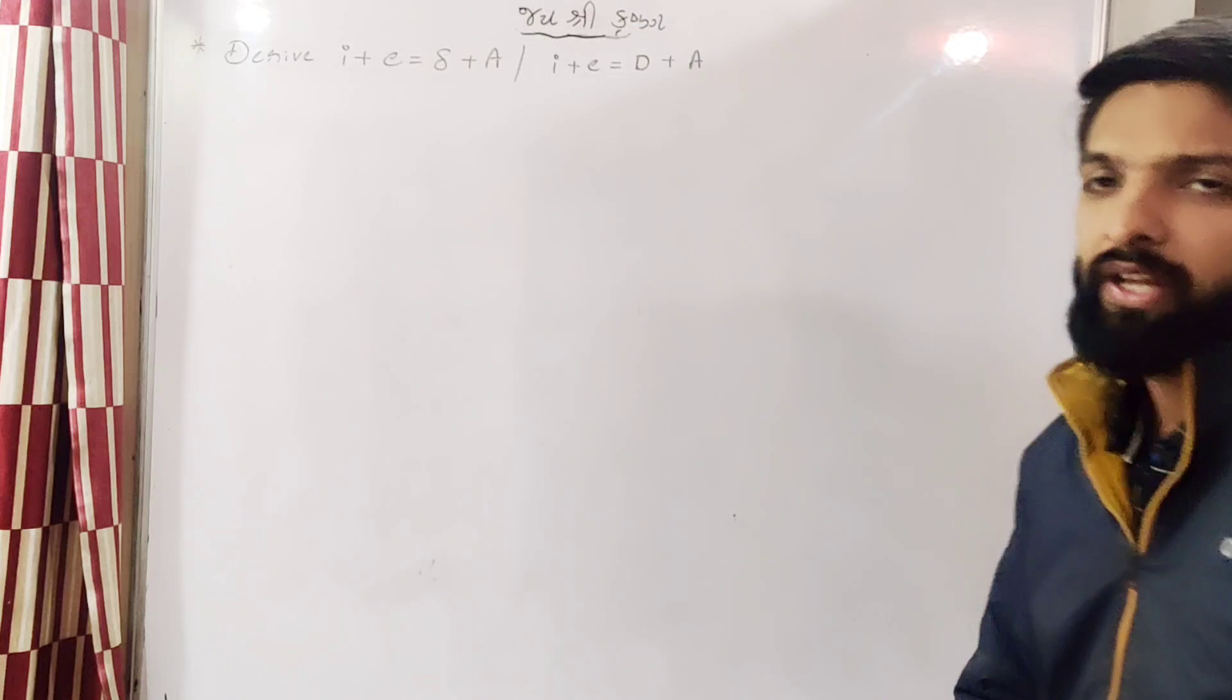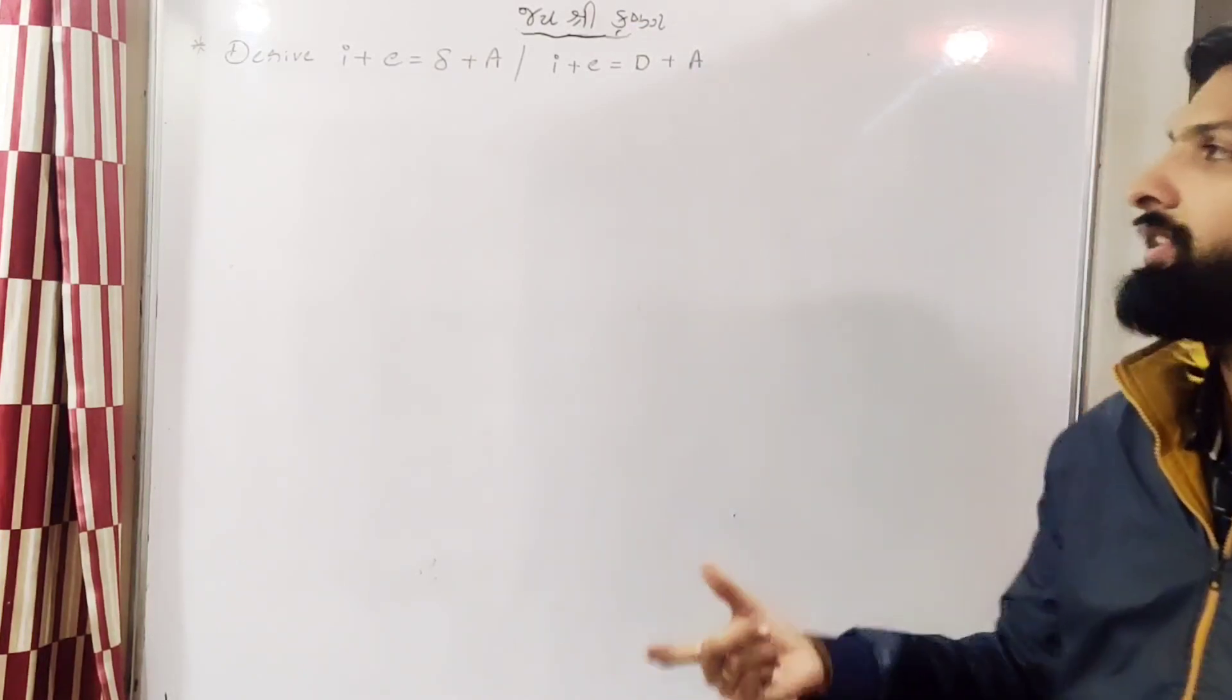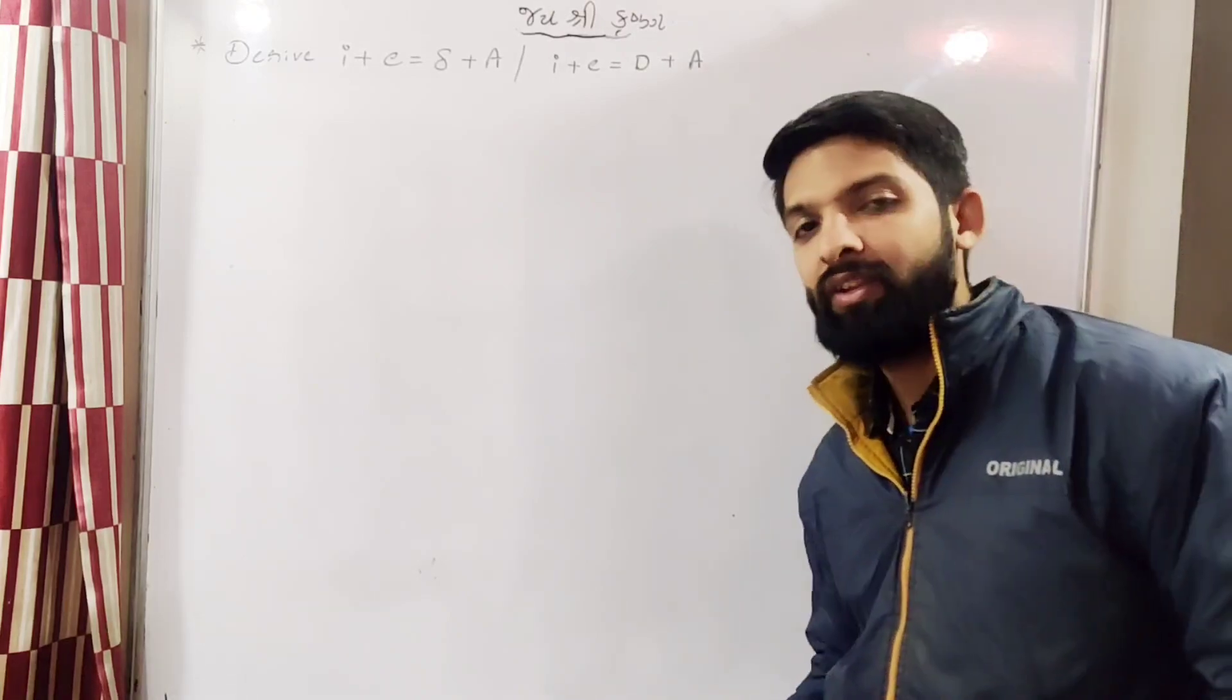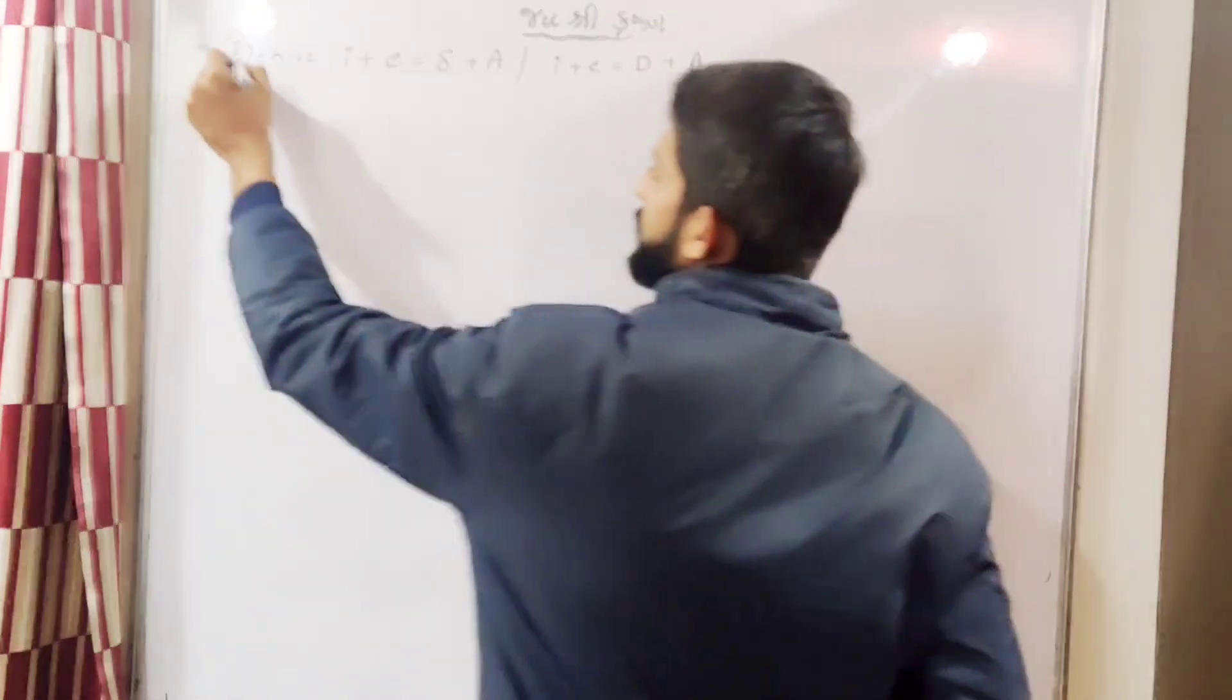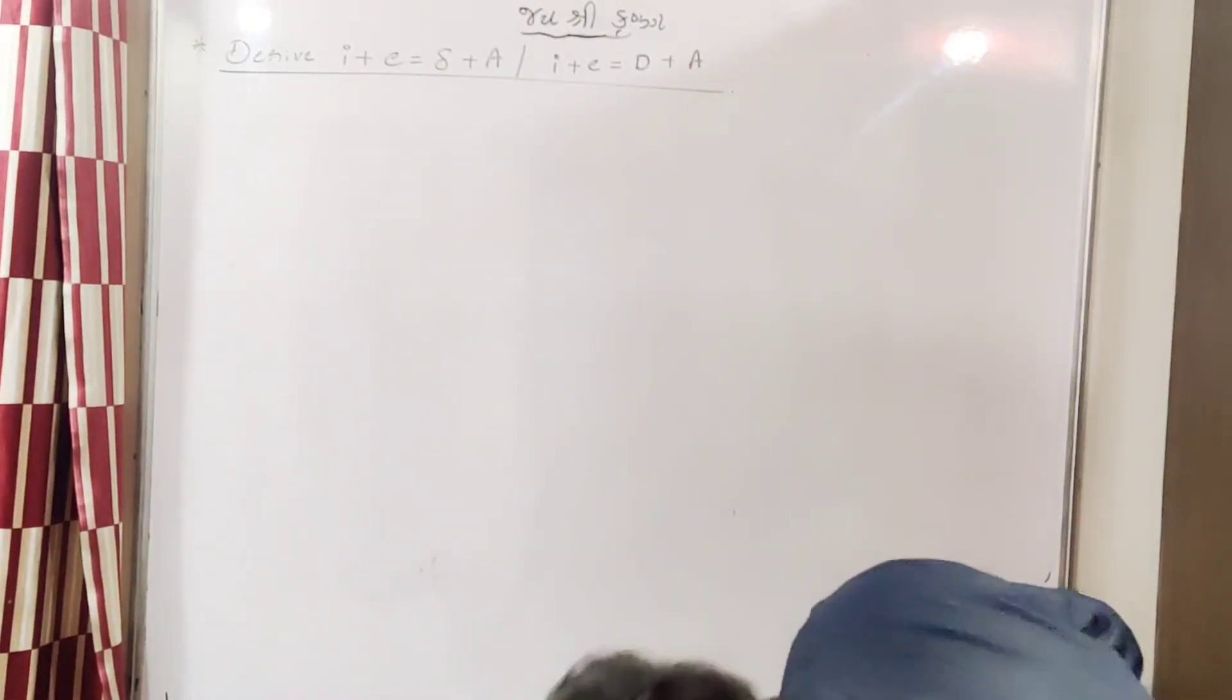So let's derive I plus E equal to delta plus A, or you can say I plus E equal to D plus A. So D is deviation, or you can say delta is deviation. This derivation is specifically for the prism. So let's derive this.